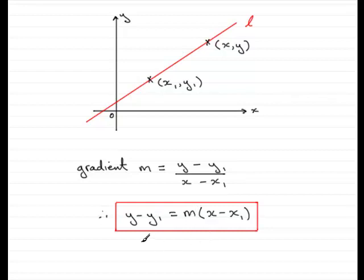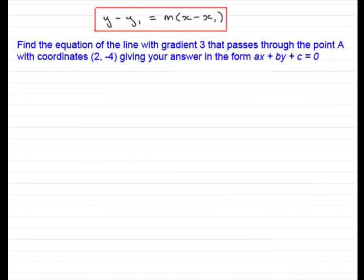What I want to show you next is how we can use this equation to find the equation of a line in various problems. So, in the first example I've got here, we've got find the equation of a line with gradient 3 that passes through the point A, with coordinates (2, -4), giving your answer in the form ax + by + c = 0.